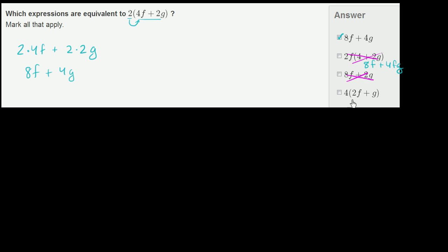And now they have 4 times 2f plus g. Well, what happens if we were to factor 4 out of 8f plus 4g, which we already know is equivalent to our original expression? So if you try to factor out a 4 right over here, you divide 8 by 4, you get 2f.